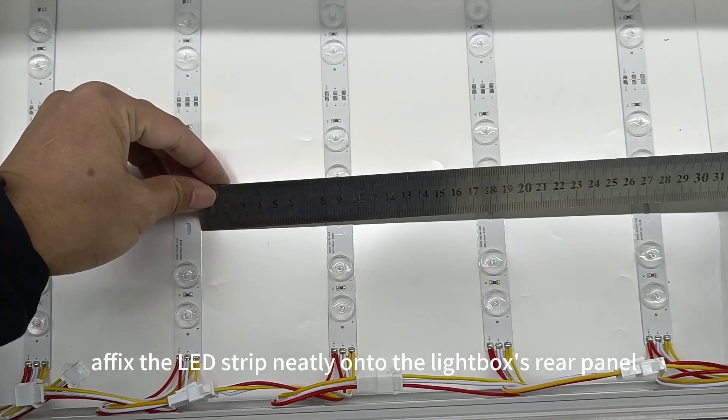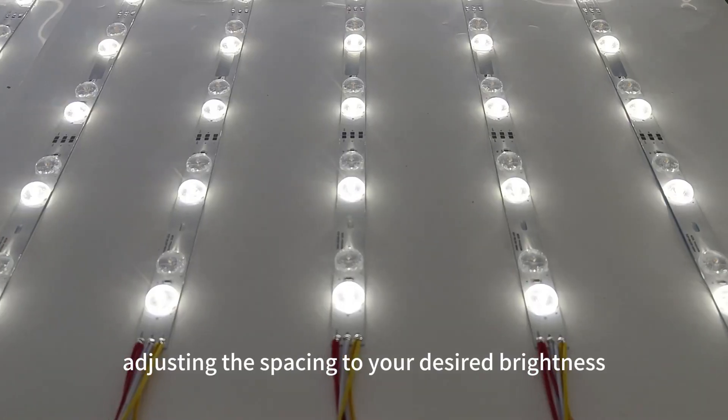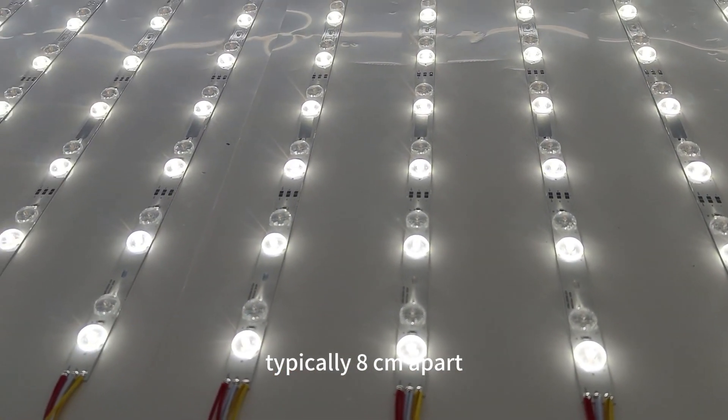Finally, fix the LED strip neatly onto the lightbox's rear panel, adjusting the spacing to your desired brightness, typically 8 centimeters apart.